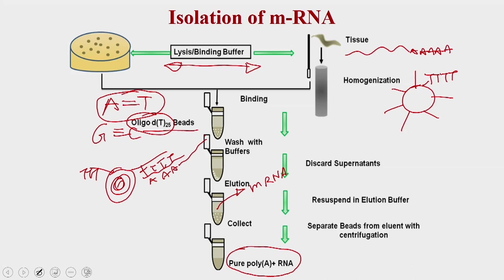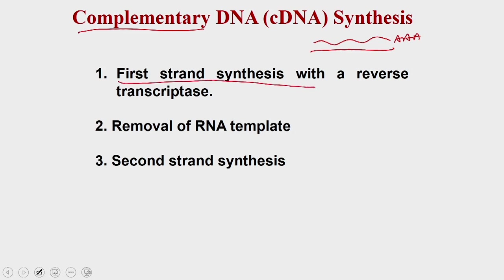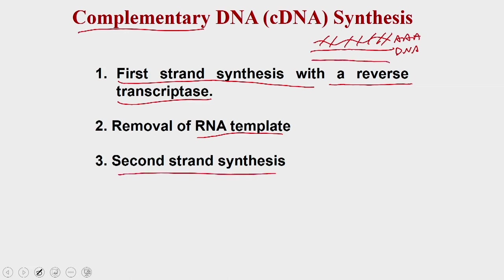Now that you have the messenger RNA, in step 2 you generate the cDNA or complementary DNA. This is done in three steps: first-strand synthesis catalyzed by reverse transcriptase, followed by removal of the RNA template, and then second-strand synthesis — giving you double-stranded DNA for subsequent cloning reactions.